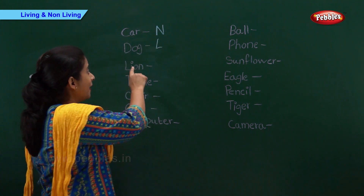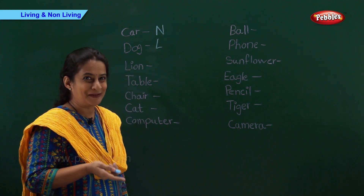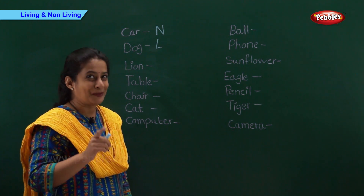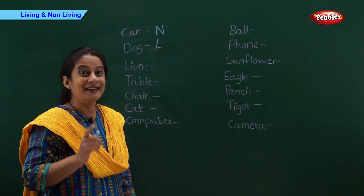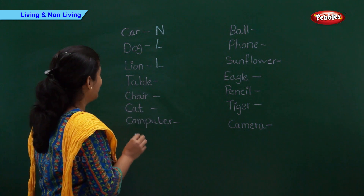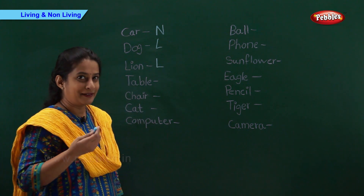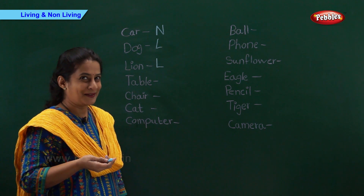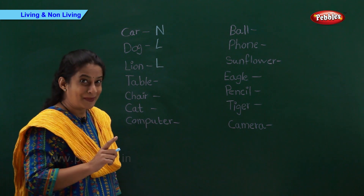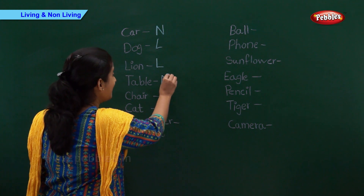And now we have lion. Who's going to tell me? Can a lion breathe? Right. So lion is a living thing. Let's write L. Now we have table. Can a table grow? Excellent. So table is a non-living thing. Let's write N.